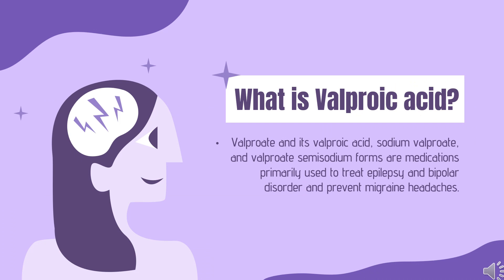Valproate and its forms — valproic acid, sodium valproate, and valproate semisodium — are medications primarily used to treat epilepsy and bipolar disorder and to prevent migraine headaches. They are useful for the prevention of absence seizures, partial seizures, and generalized seizures. Valproate was first made in 1881 and came into medical use in 1962. It is on the WHO list of essential medicines. In 2020, it was the 109th most commonly prescribed medication in the United States, with more than 6 million prescriptions.